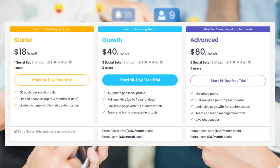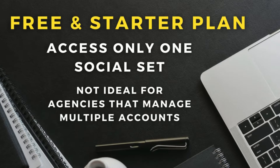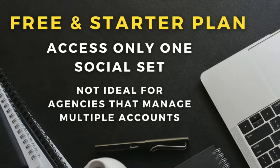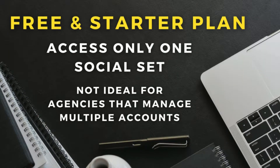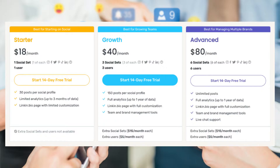What we recommend is getting started with the Starter plan, which is more sufficient for small businesses. This plan allows you to post up to 30 posts per month per social channel and gives you access to essential social media management features. Both the free and Starter plans only allow you to manage one social set — one Instagram, one Facebook, one Twitter account — and are for one user only. If you need more users, more social sets, or advanced features, you can upgrade to a higher tier plan, and each paid plan offers a 14-day free trial.